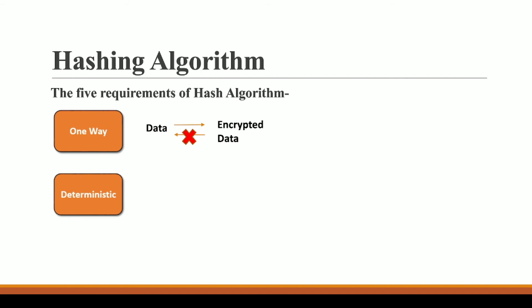Second, it must be deterministic: for every single input it always gives the exact same hash. If 1-2-3 produces hash DEF, it will always produce DEF — you will never see a situation where the same input gives two different hashes. For example, ABC always produces hash 845; it will never produce 849 or 948.